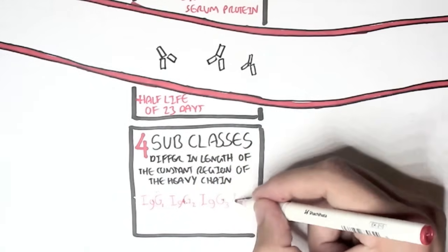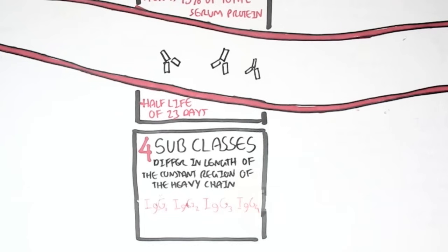And deficiencies in any of these cause, is a sort of indicator of specific things, such as a deficiency in IgG 4 implies allergy, easily being allergic.